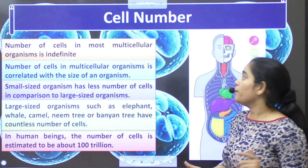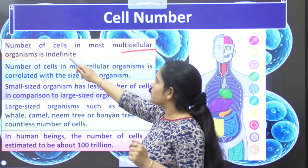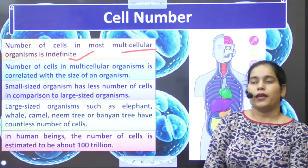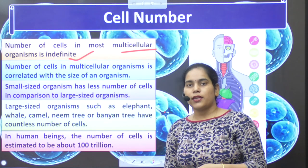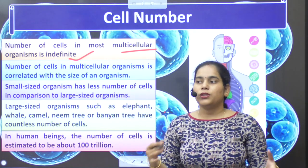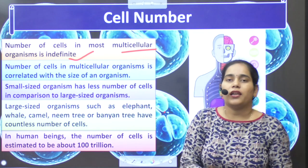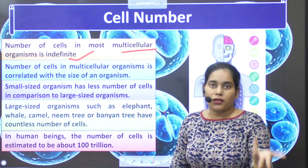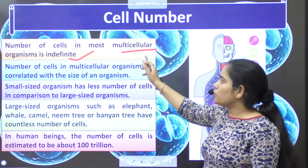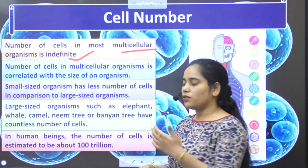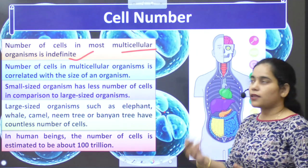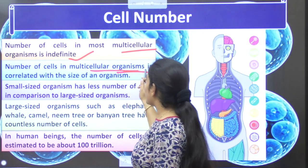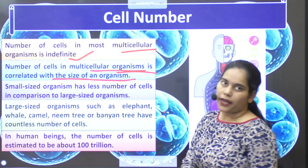The large number of cells in a multicellular organism is indefinite. Cells are so small that they can only be seen through a microscope. When you think about such big humans, whales, elephants, or large trees — counting the cells is practically impossible. The number of cells in a multicellular organism is correlated with the size of the organism.